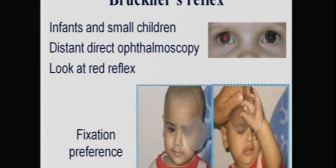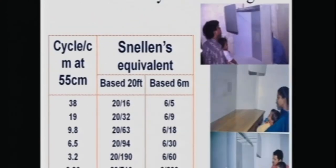Bruckner's reflex allows you to identify any abnormality — either amblyopia or strabismus — by looking at the reflex and comparing it between the two eyes. In children it is also easy to pick up amblyopia by fixation preferences. Sometimes it's not easy to measure visual acuity, but just by observing behavior on covering either eye you can identify the dominant eye — there is hardly any resistance covering the left eye, but the moment you cover the right eye the child is extremely unhappy.